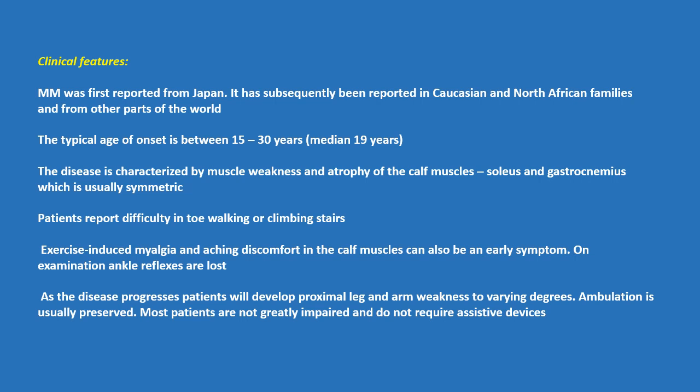The disease is characterized by muscle weakness and atrophy of the calf muscles — soleus and gastrocnemius — which is usually symmetric. Patients report difficulty in toe walking or climbing stairs. Exercise-induced myalgia and aching discomfort in the calf muscles can also be an early symptom. On examination, ankle reflexes are lost.